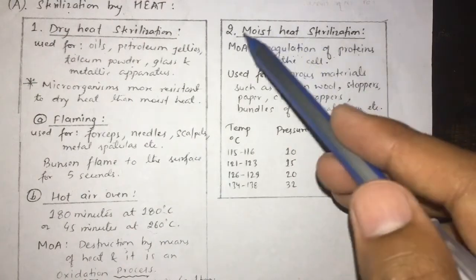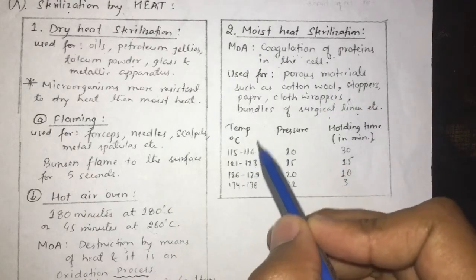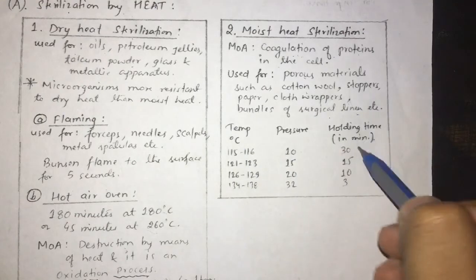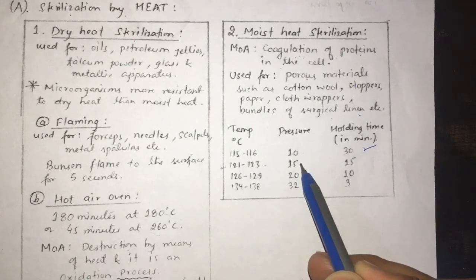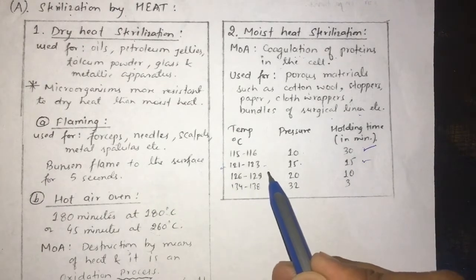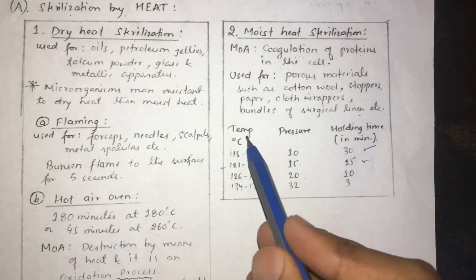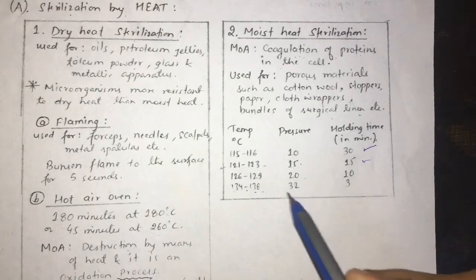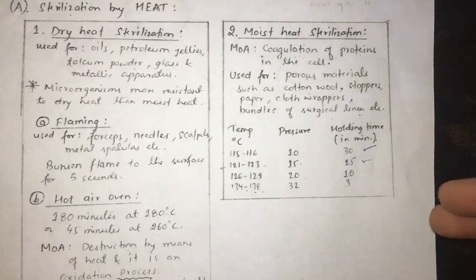This is important for the GPAT exam. The moist heat sterilization temperature and pressure table: 115–116°C at 10 psi for 30 minutes; 121–123°C at 15 psi for 15 minutes; 126–129°C at 20 psi for 10 minutes; and 134–138°C at 32 psi for 3 minutes.